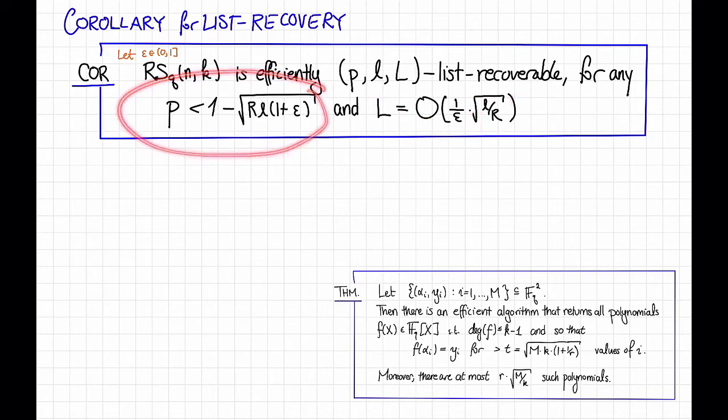Let's look at this radius p here. Let's let epsilon go to zero, so let's just ignore that basically. So then this says that p can be all the way up to 1 minus the square root of r times l. This should look a lot like the Johnson bound. For list decoding, the Johnson bound says that the list decoding radius can be as large as 1 minus the square root of r. And here what we're doing is we're throwing an l in under the square root. This turns out to be the analogous statement of the Johnson bound for list recovery.